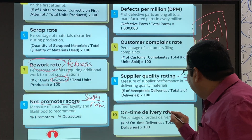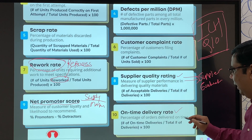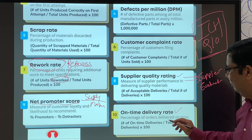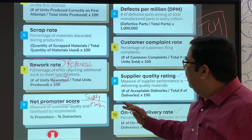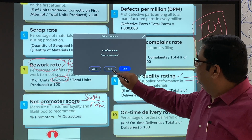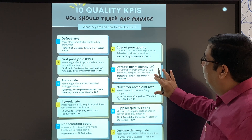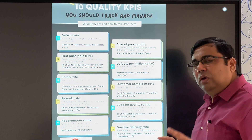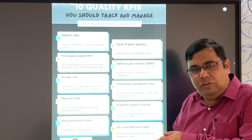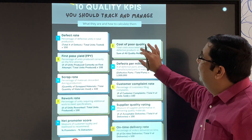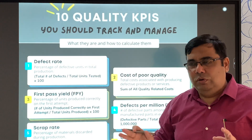The tenth KPI is on-time delivery rate — the percentage of orders delivered on time. It is calculated as on-time deliveries divided by total deliveries, multiplied by 100. So these are the simple 10 KPIs, based on ICH Q10 quality metrics and the expectations of many regulatory agencies.